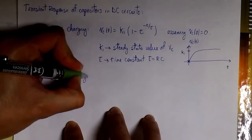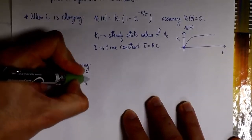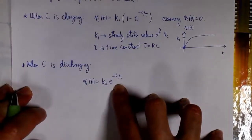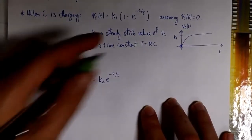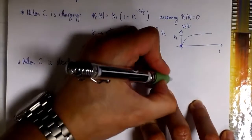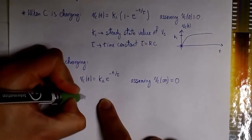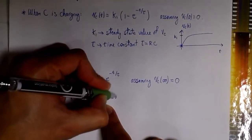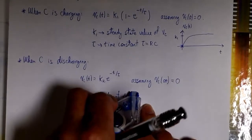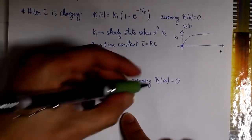The other condition is when the capacitor is discharging. For this case, the equation is a bit different, because now we're assuming that the capacitor is going to fully discharge. The equation is going to be a constant k2 times the exponential to minus t over tau. We're assuming that for a sufficiently large t, the capacitor is fully discharged and the voltage is zero. The constant k2 is the initial value of the voltage between the terminals of C — we assume the capacitor is already in steady-state conditions, and the voltage before it starts discharging is the value of k2.